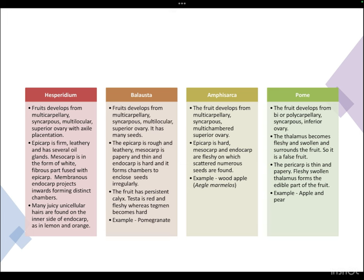Belosta fruits develop from multicarpillary syncarpus multilocular superior ovary with many seeds. The epicarp is rough and leathery, mesocarp is papery and thin, and the endocarp is hard, forming chambers to include seeds irregularly. The fruit has a persistent calyx. The testa or seed coat is red and fleshy, whereas the tegmen (inner seed coat) becomes hard. This describes pomegranate. Episarka fruits develop from multi-carpillary syncarpus multi-chambered superior ovary; epicarp is hard and tough; mesocarp and endocarp are fleshy with numerous scattered seeds. The example is wood apple (Aegle marmelos), which is processed to form drinks in summer.